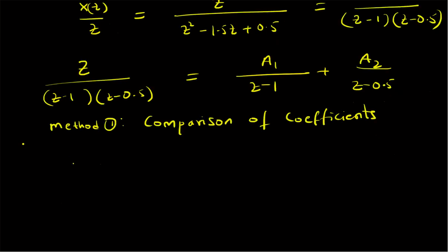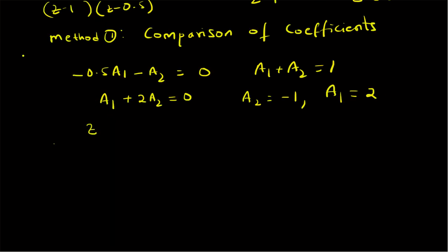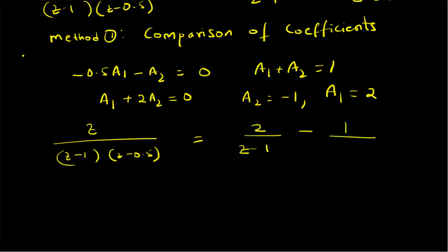Comparing the constant terms gives -0.5·A1 - A2 = 0, and comparing the coefficients of z gives A1 + A2 = 1. Multiplying the first equation by -2 gives A1 + 2·A2 = 0, so A1 = -2·A2. Substituting A1 = -2·A2 into the second equation gives A2 = -1, and therefore A1 = 2.